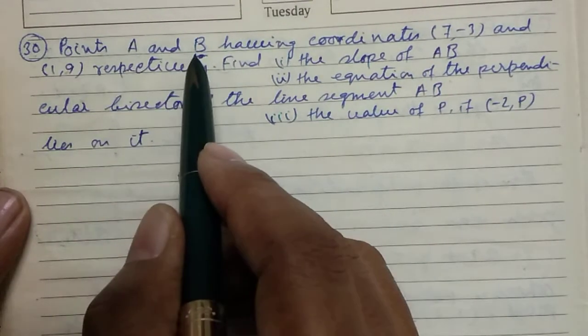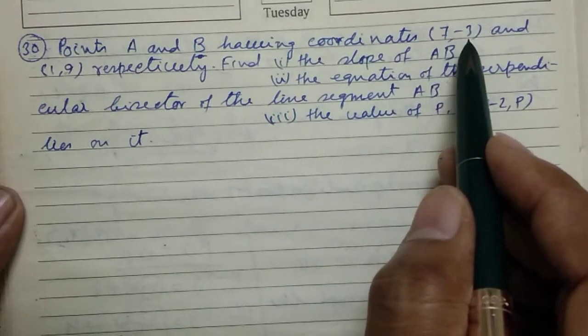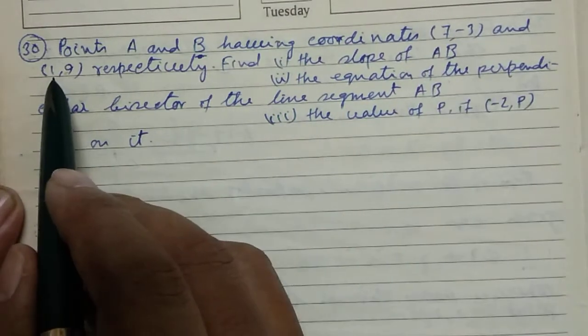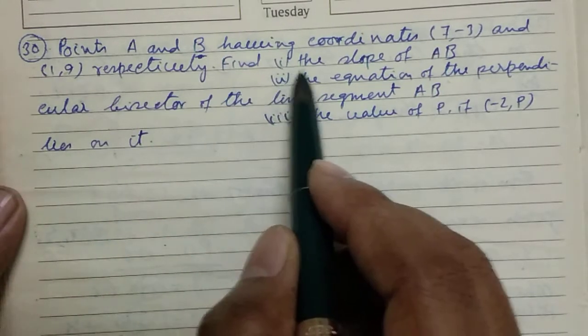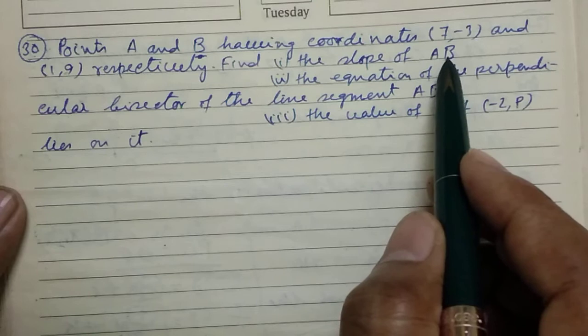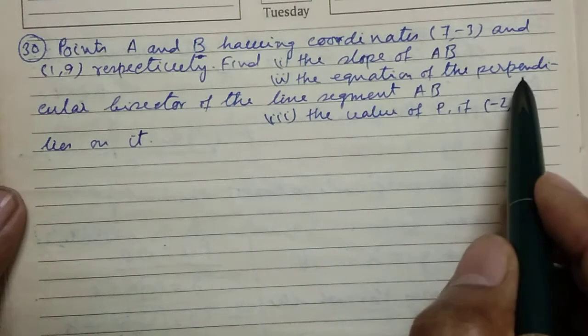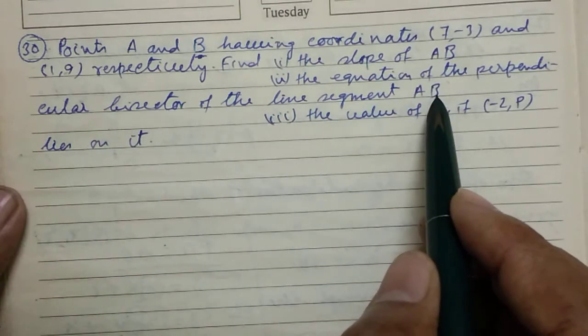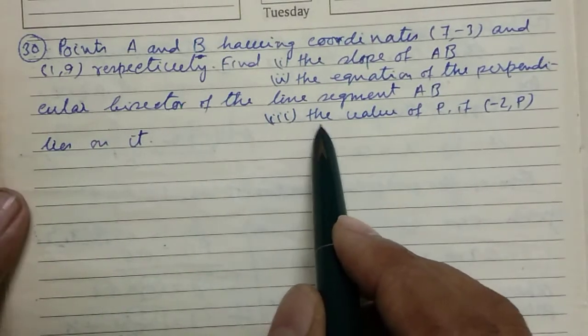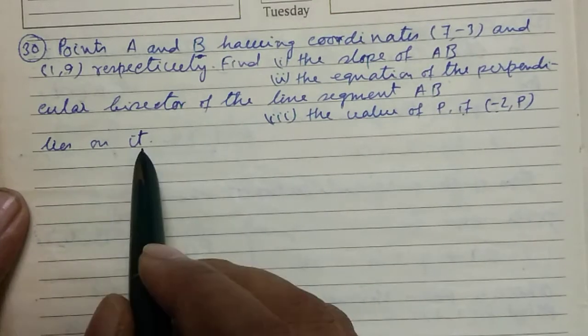Points A and B having coordinates (7, -3) and (1, 9) respectively. Find: (i) the slope of AB, (ii) the equation of the perpendicular bisector of the line segment AB, (iii) the value of P if (-2, P) lies on it.